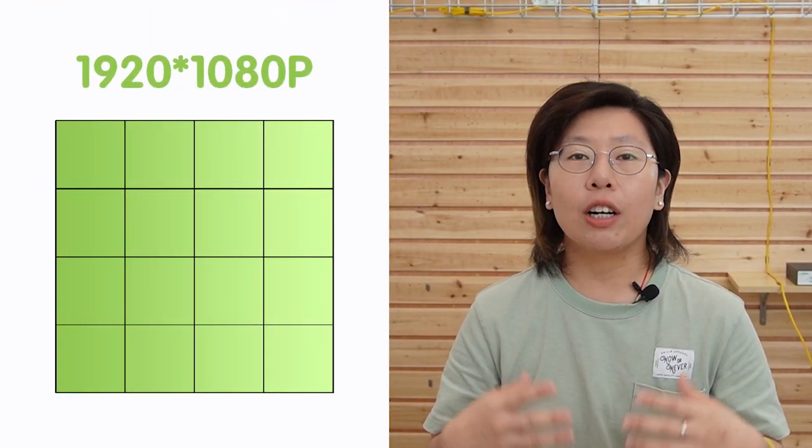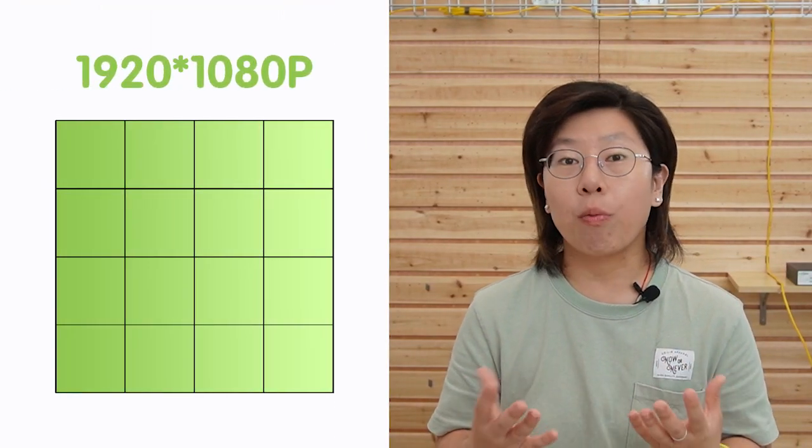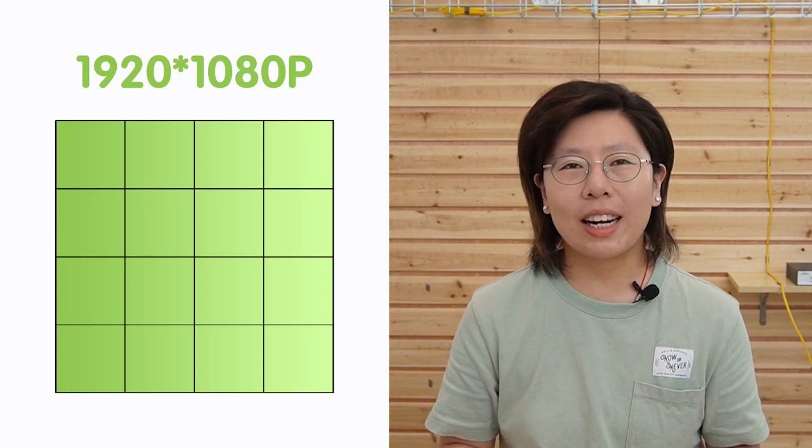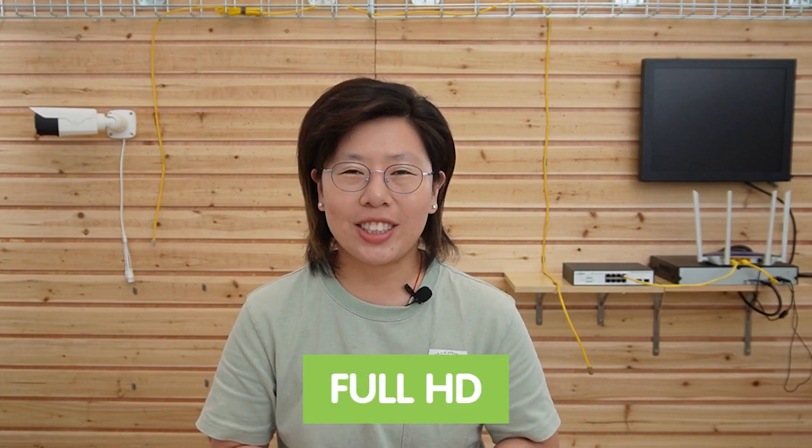Let's start with 2MP, also known as 2 megapixel. It typically offers a resolution of 1920x1080 pixels, commonly known as Full HD. It can provide a decent level of detail and is suitable for everyday applications.